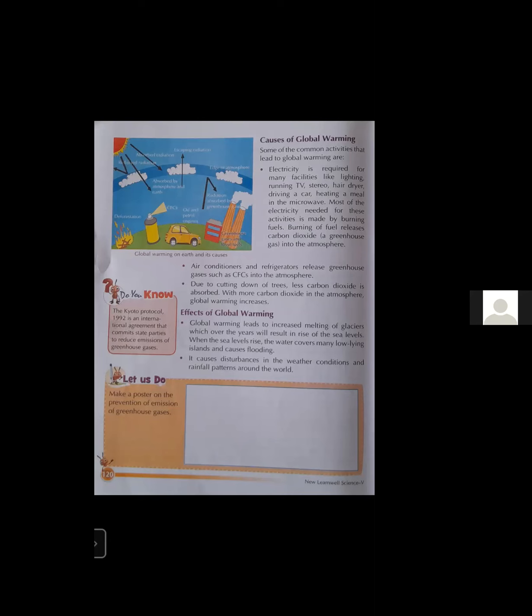Air conditioners and refrigerators release greenhouse gases such as CFC — chlorofluorocarbon — which also traps heat radiation and increases the overall temperature of the Earth's surface. Due to cutting down of trees, less carbon dioxide is absorbed, so with more carbon dioxide in the atmosphere, global warming increases.